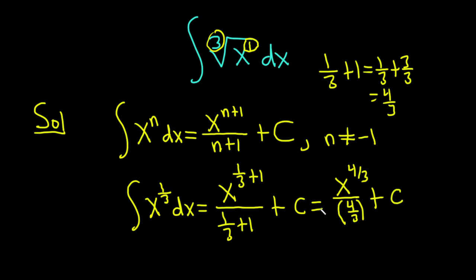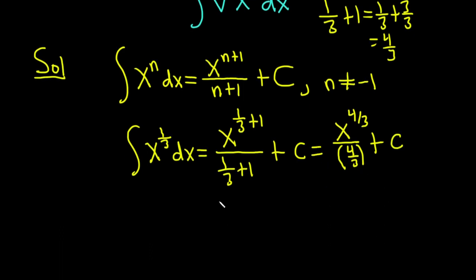That's still not good enough because it looks really bad. This is actually equal to... When you divide by 4/3, you're really multiplying by the reciprocal. The reciprocal of 4/3 is 3/4.